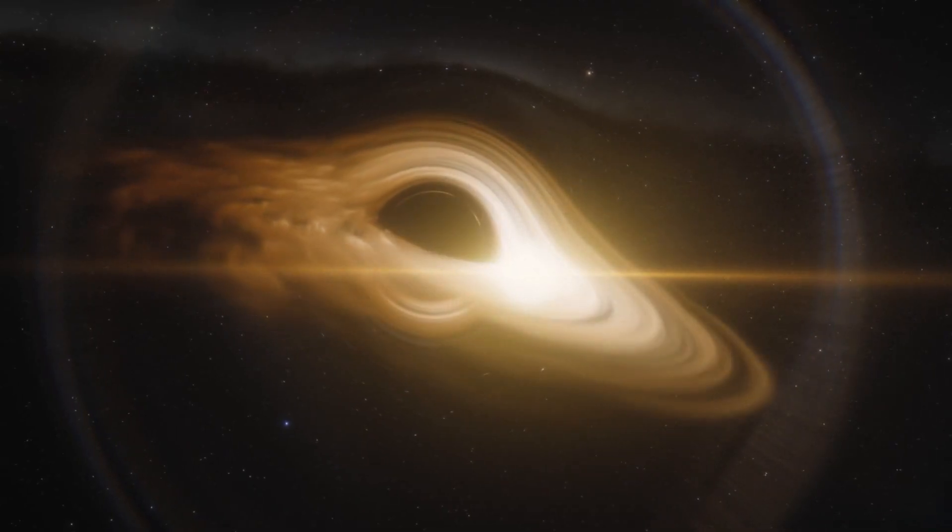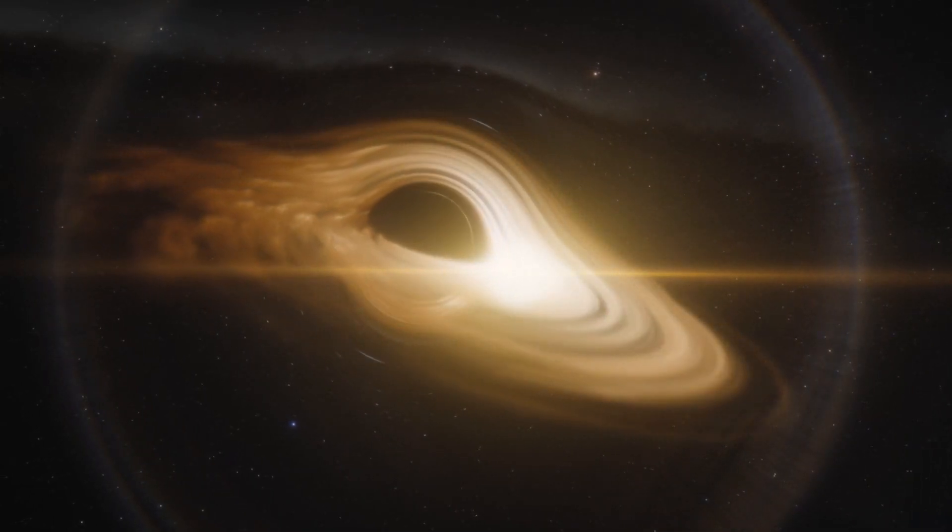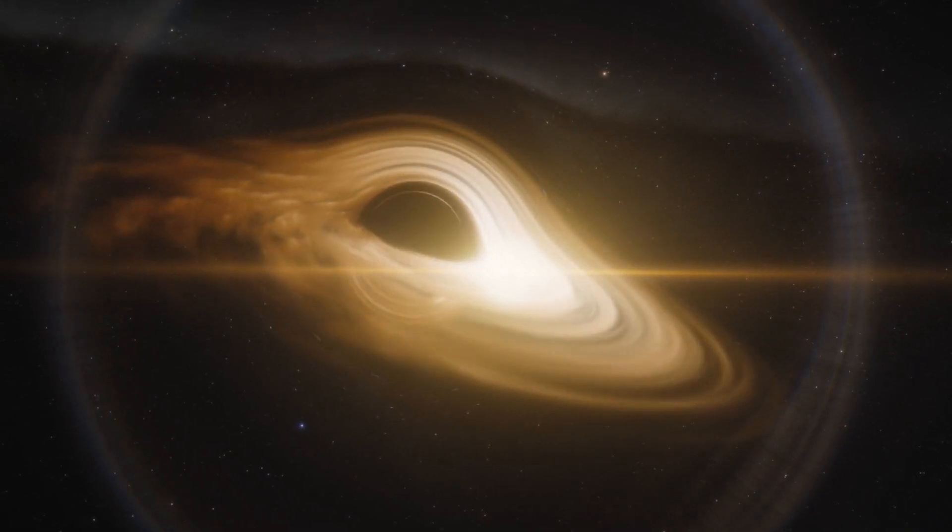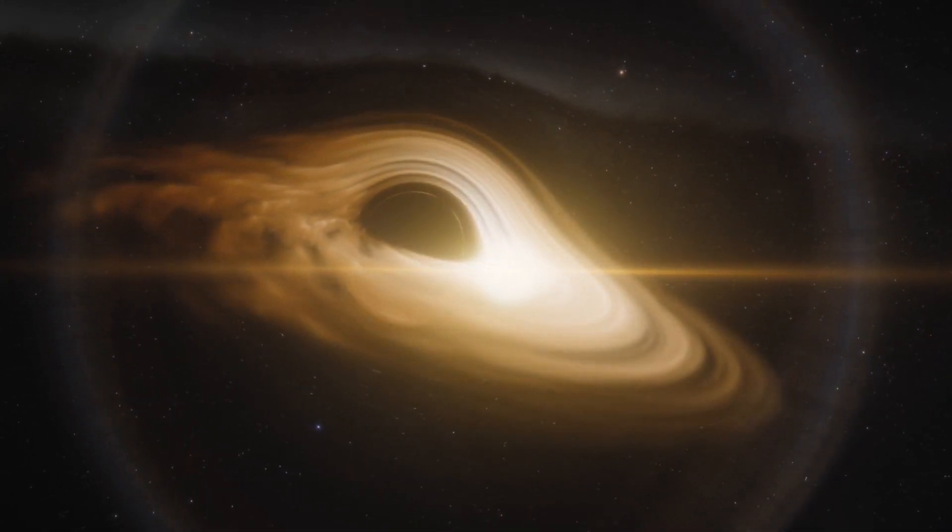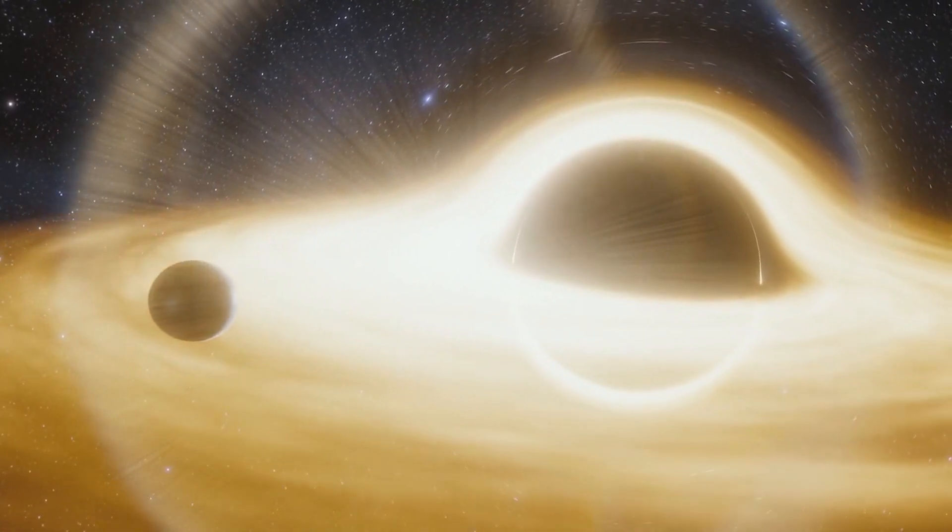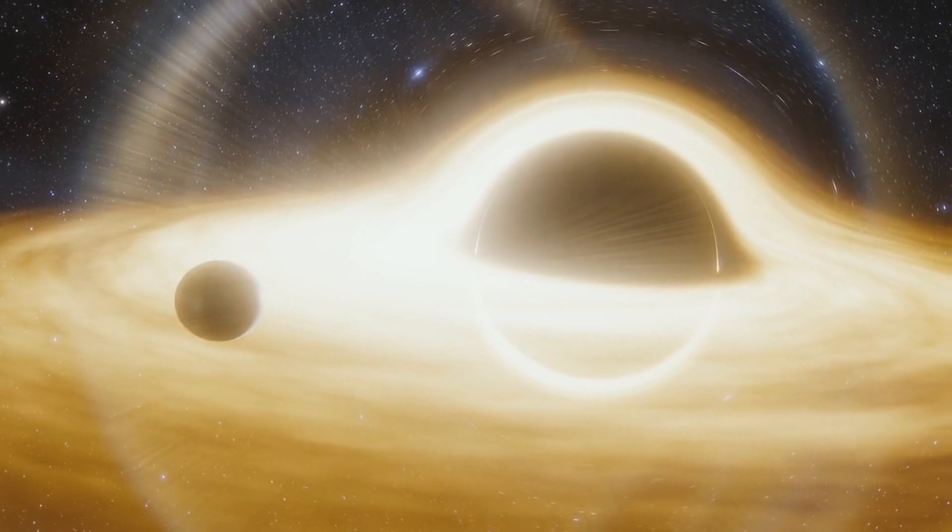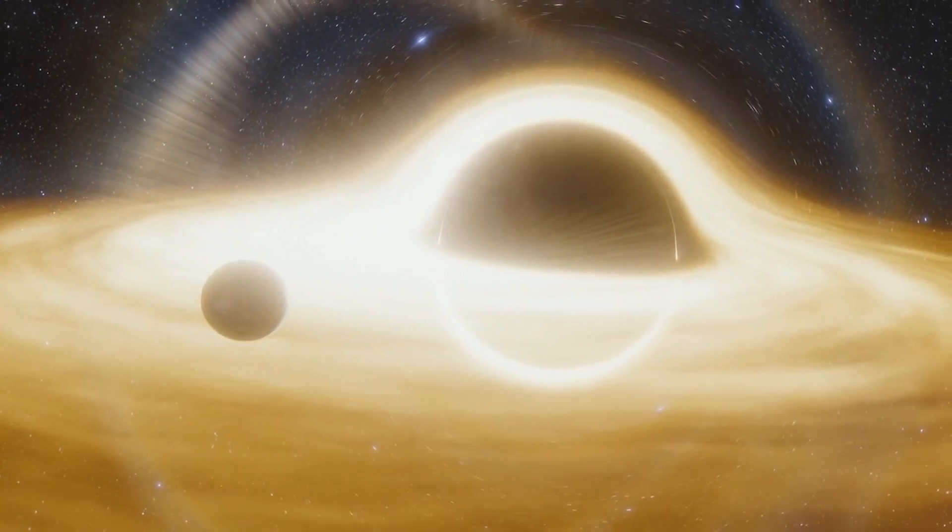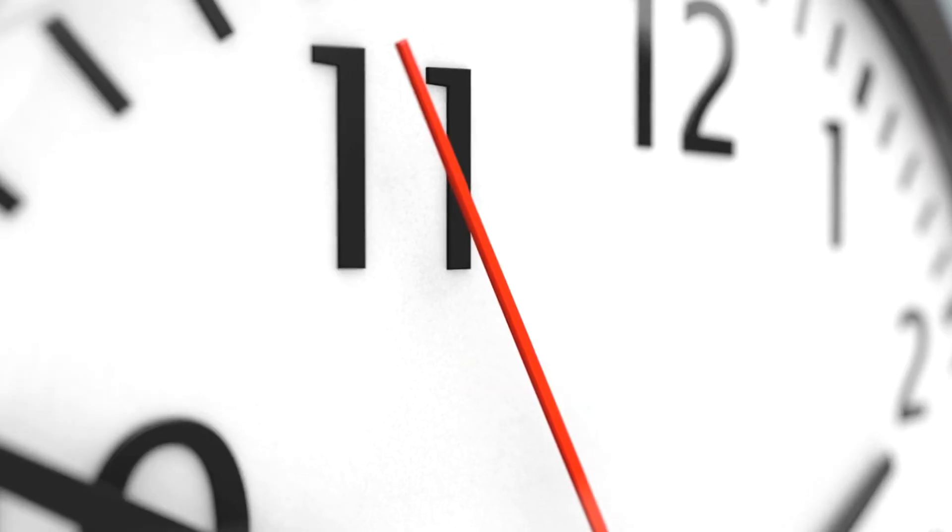The resulting object is so massive and compact that nothing, not even light, can escape its gravitational field beyond a certain point known as the event horizon. In essence, a black hole is a region in space where gravity is so strong that the very fabric of space and time becomes warped.